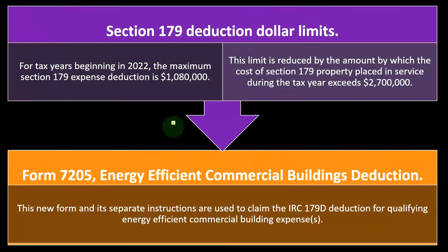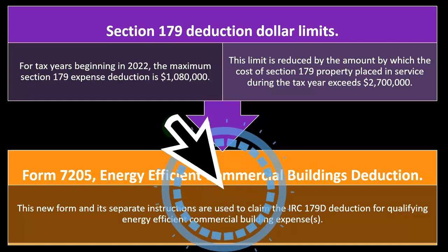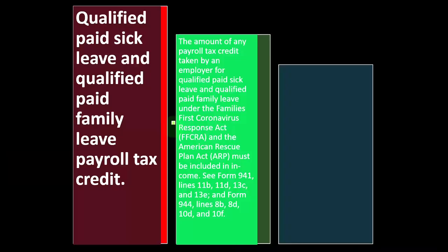Form 7205 is the new form for the energy efficient commercial building deduction. This new form and its separate instructions are used to claim the IRC Section 179D deduction for qualifying energy efficient commercial building expenses.